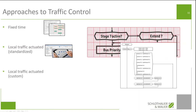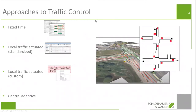Then we have local traffic actuated custom solutions — what you find mostly in Germany, Austria, and Switzerland. These are controls tailor-made for a certain controller or intersection. Then we have central adaptive controls — basically controls situated in the central, where the controller is merely executing commands, or even stage activation is controlled by the central. Different central adaptive approaches draw the line differently: how much functionality remains in the local controller — but we will come to that.